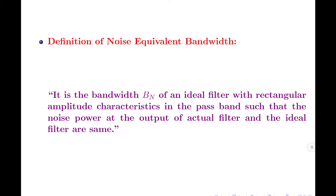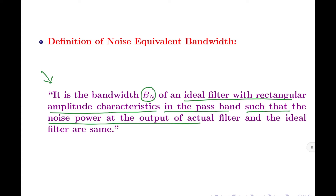Figure 2 shows the magnitude squared of H(f) for an actual practical band pass filter, and Figure b shows the magnitude squared of H(f) for an ideal band pass filter. The noise equivalent bandwidth Bn is the bandwidth of an ideal filter with rectangular amplitude characteristics in the pass band, such that the noise power at the output of the actual filter and at the output of the ideal filter are exactly the same. Such a bandwidth is called the noise equivalent bandwidth.